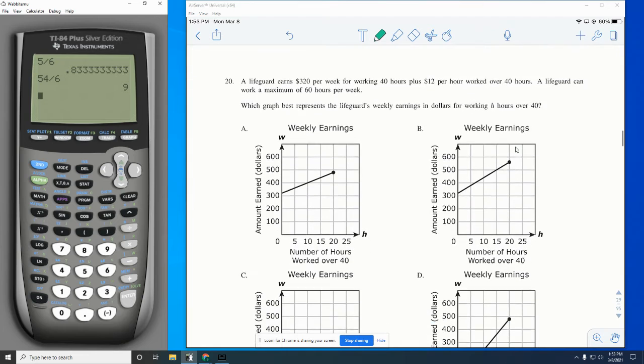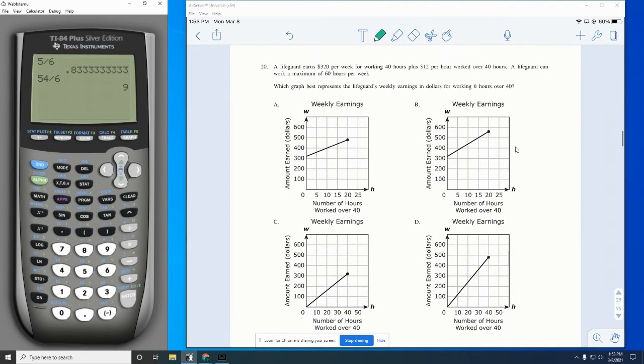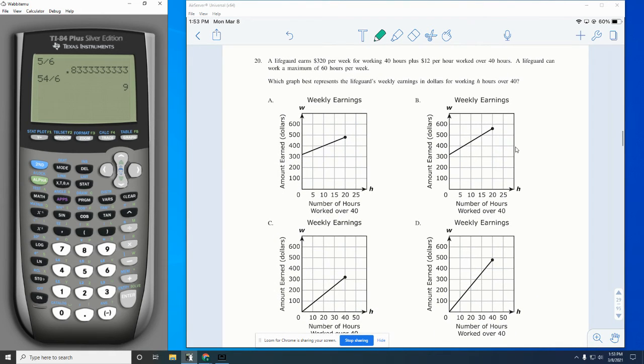So we're going to flip two pages and look at number 20. Number 20 is this whole page. So a lifeguard earns $320 per week for working 40 hours, plus $12 per hour worked over 40 hours. A lifeguard can work a max of 60 hours per week, which best represents the lifeguard's weekly earning in dollars for working H hours over 40. So one thing that's important is we are talking about hours over 40.